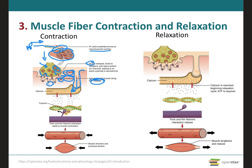The presence of calcium inside the muscle cell is important because it will bind to troponin. Remember, troponin is holding the tropomyosin in place and covering the myosin binding sites on the actin. Once calcium binds to troponin, troponin allows the tropomyosin to change its conformation and expose the myosin binding sites on the actin filaments. This exposure permits the myosin head to bind to the myosin binding sites on the actin.